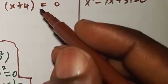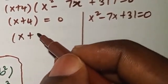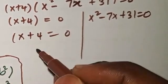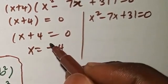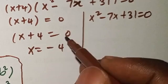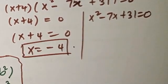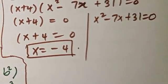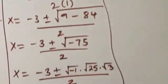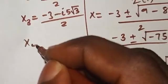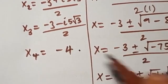So now we have x plus 4 equals 0, or we have x squared minus 7x plus 31 equals 0. So from there, x plus 4 equals 0 gives x equals minus 4. So we have another solution, x4 equals minus 4.